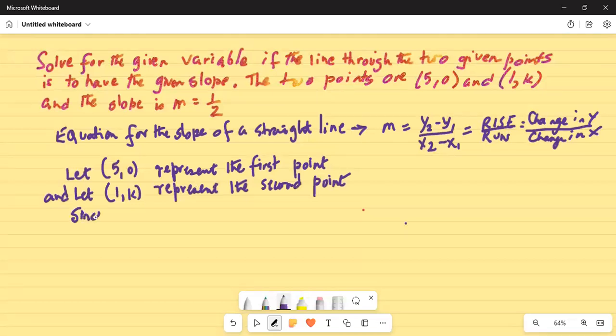Since (5, 0) is the first point, then x1, or x coordinate of the first ordered pair, is 5 and y1 equals 0.